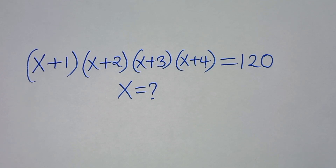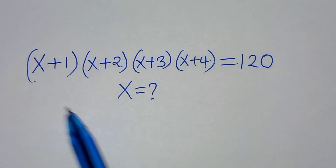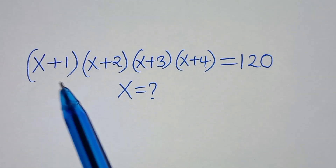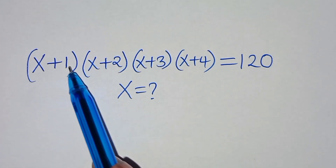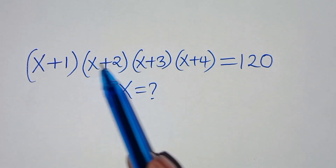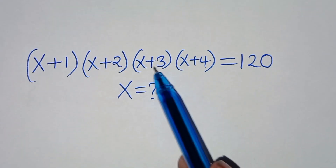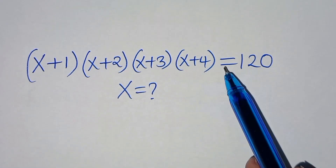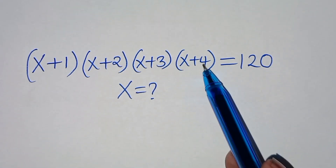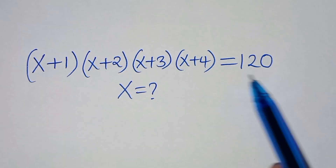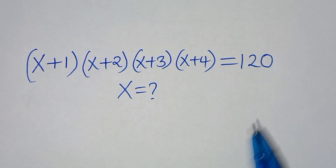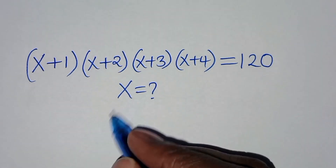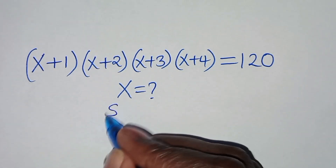Hello everyone, you're welcome to solve this nice algebra problem which is (x+1)(x+2)(x+3)(x+4) = 120. So what is the value of x?